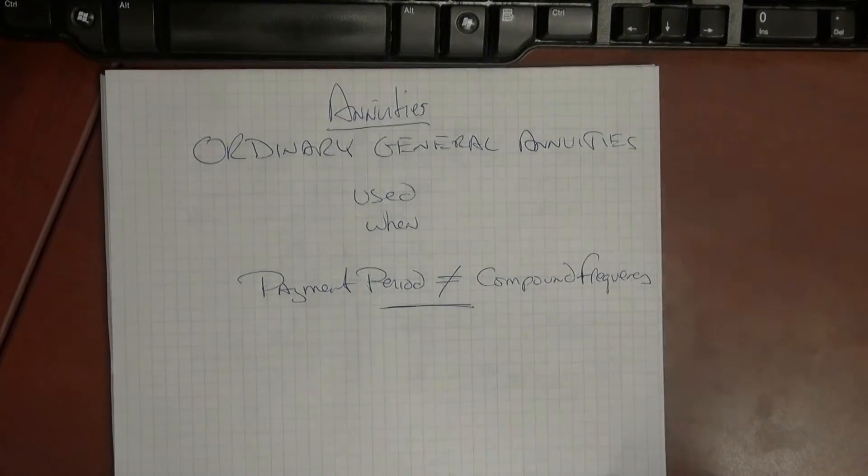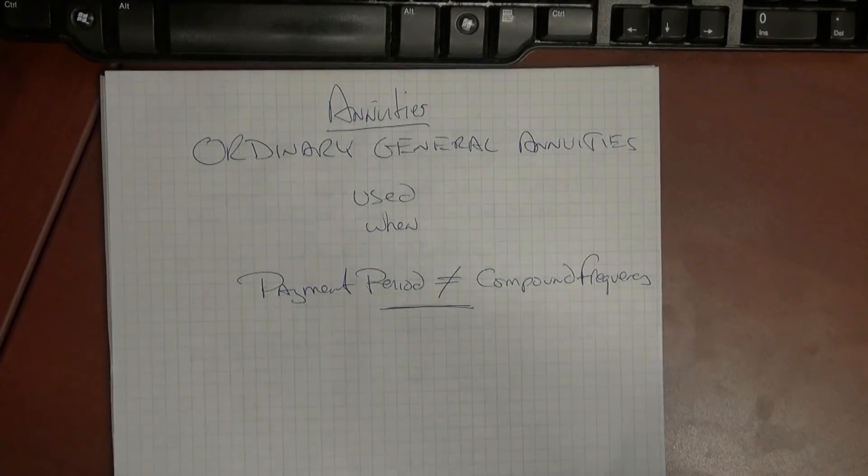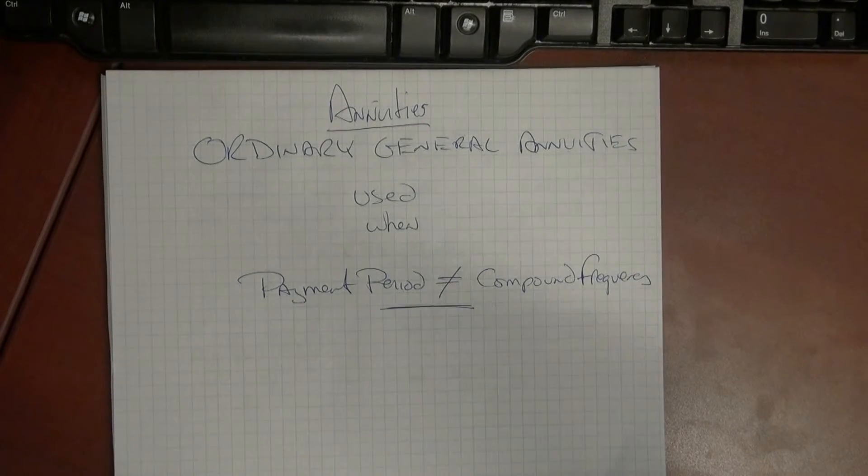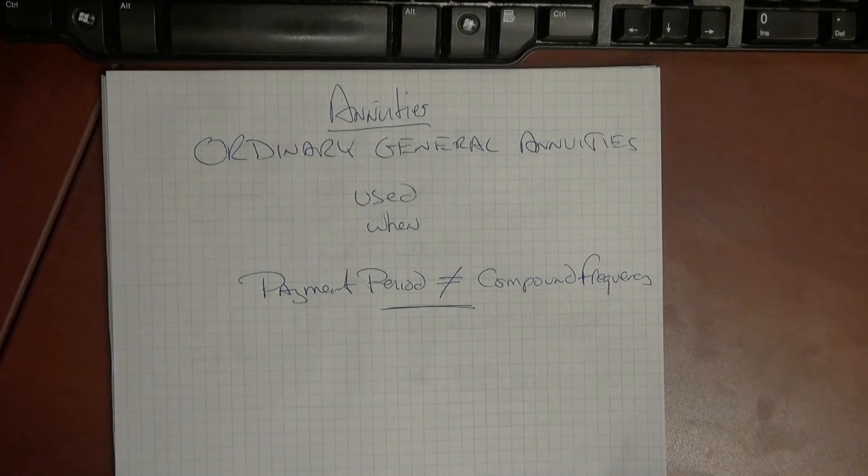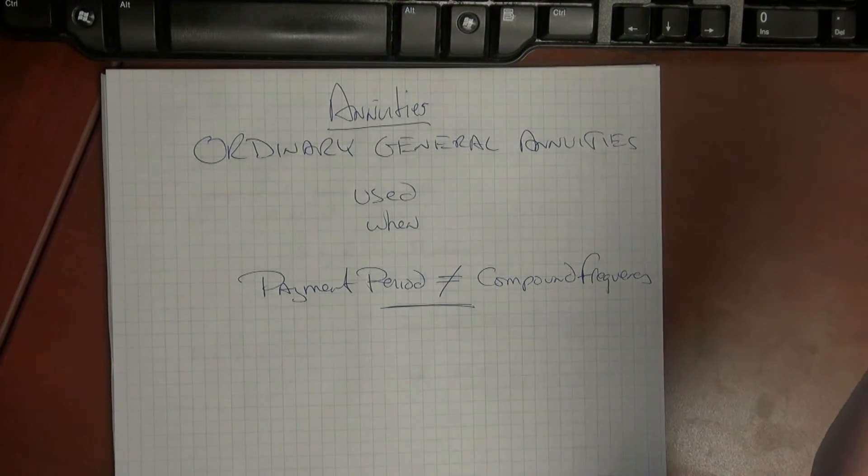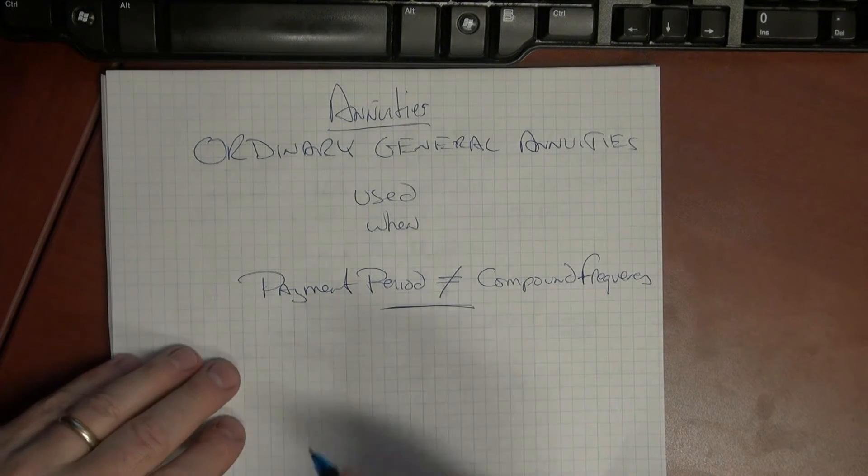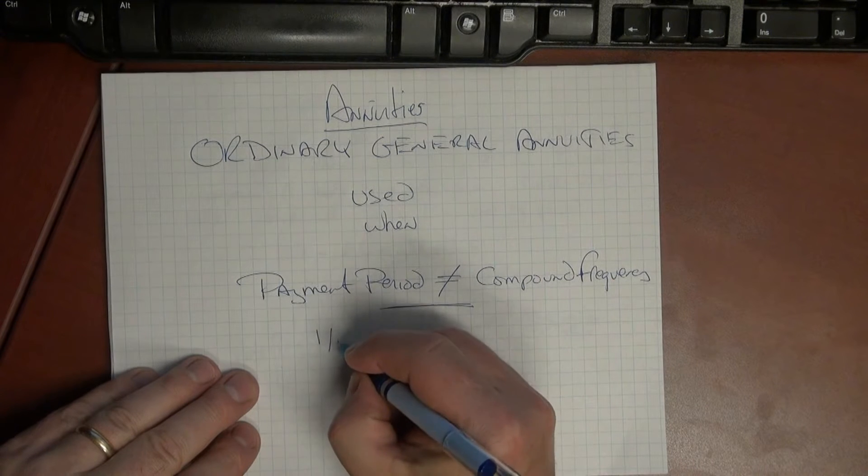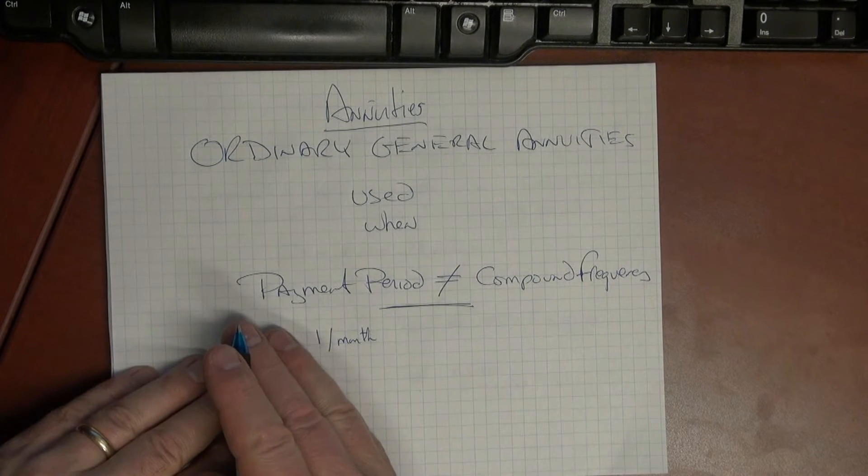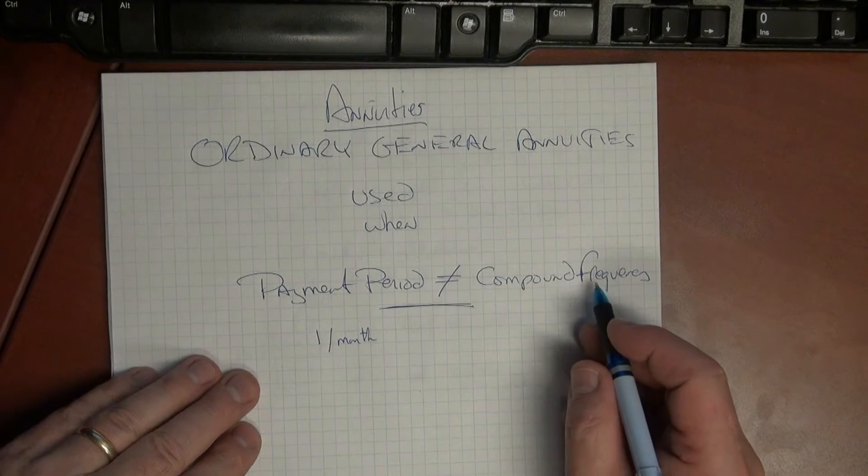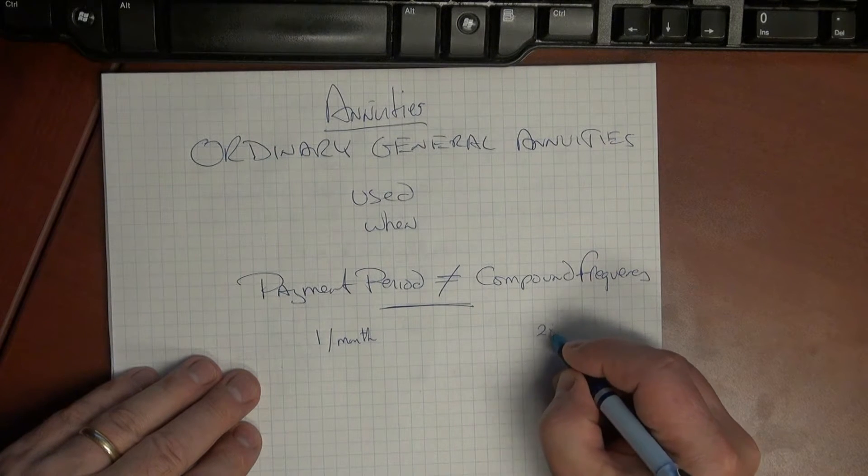Essentially you might ask, what's the difference between the two? Well, an ordinary general annuity calculation is used when we have a different payment period and compound frequency. Let's take for example if we had a payment period of once per month, and if we had a compound frequency that wasn't once per month, in other words say for example two times a year.